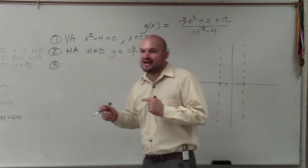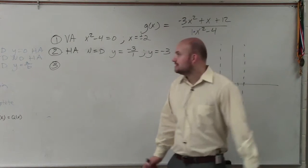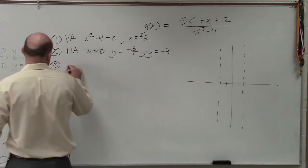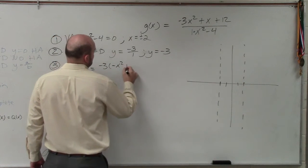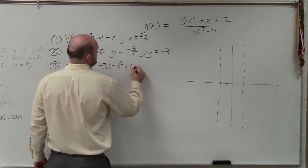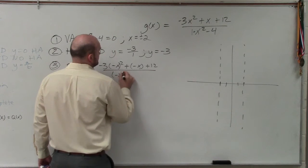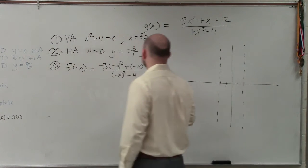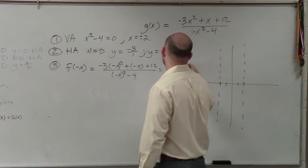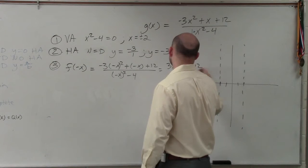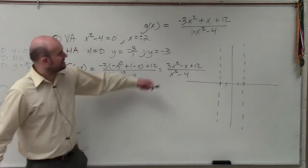So what I'm going to do is I'm just going to plug in f of negative x. What I get out is negative 3x squared minus x plus 12 over x squared minus 4. Is that the exact same as my original?